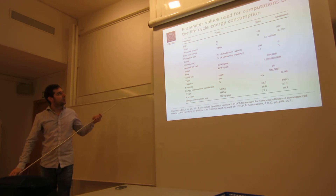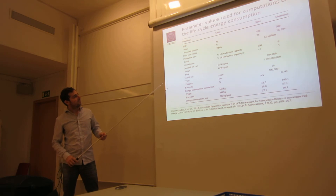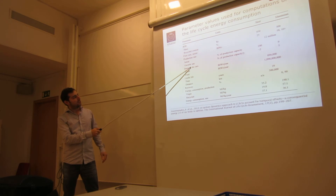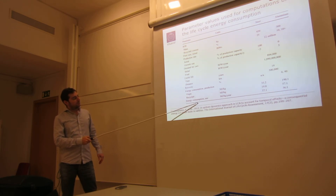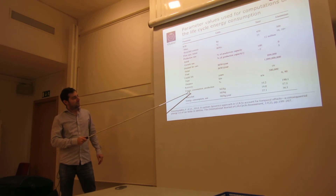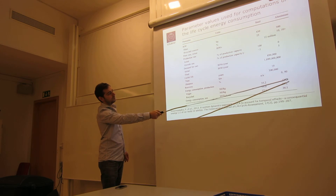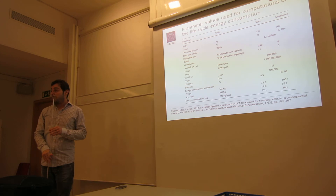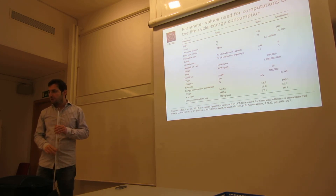Here are the parameter values for the computations. What is important is the demand for cars that they assumed, the useful lifetime, and the energy benefits of using recycled aluminum versus virgin aluminum. I will distribute this table for the exercise so you can look more carefully.